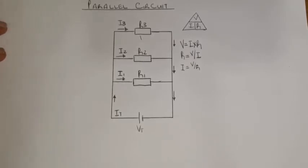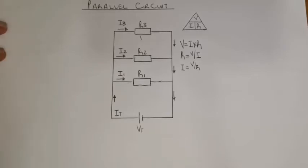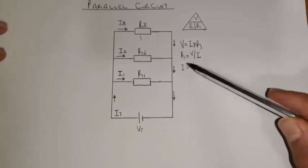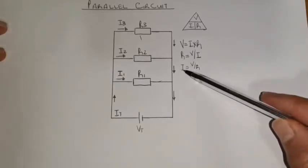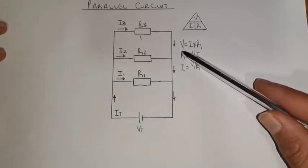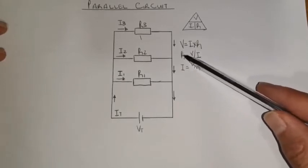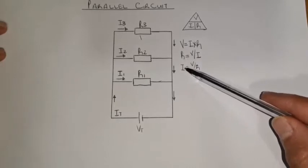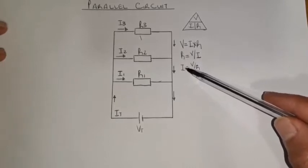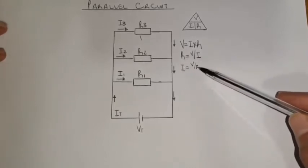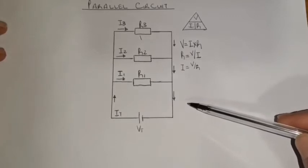The next thing you need to understand is the fact that calculating the total resistance in these circuits is one of the most important things. Because if you have your total resistance, you will need it to calculate your total current. So the total resistance must be correctly calculated, otherwise your total current is going to be incorrect because you're going to use it in this specific formula.